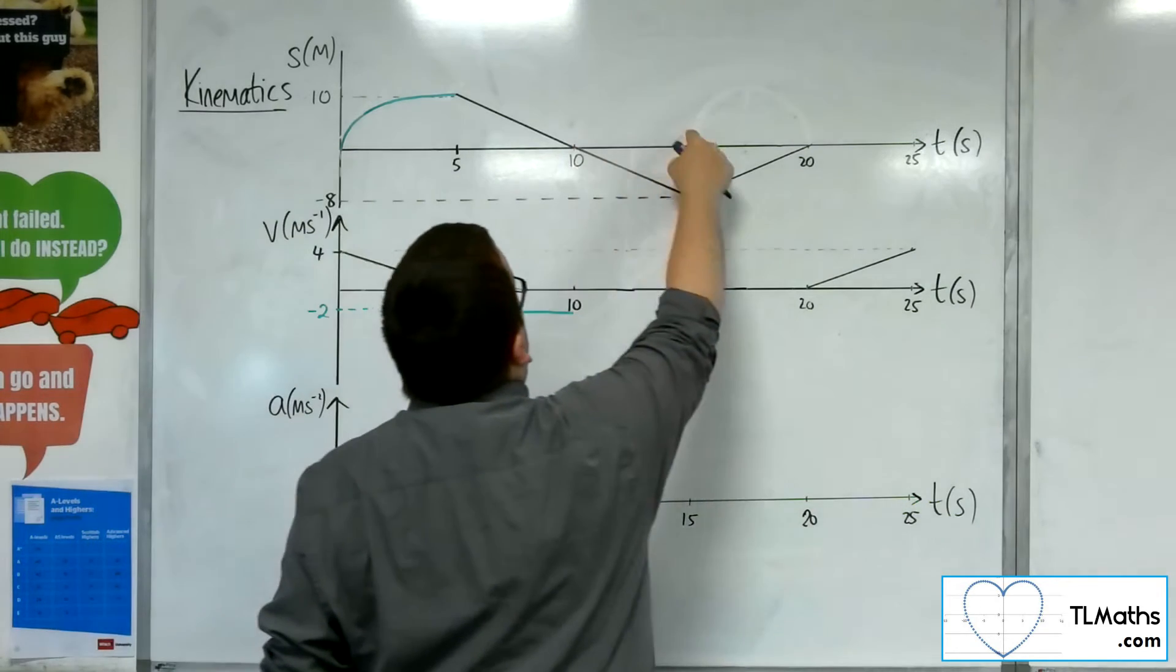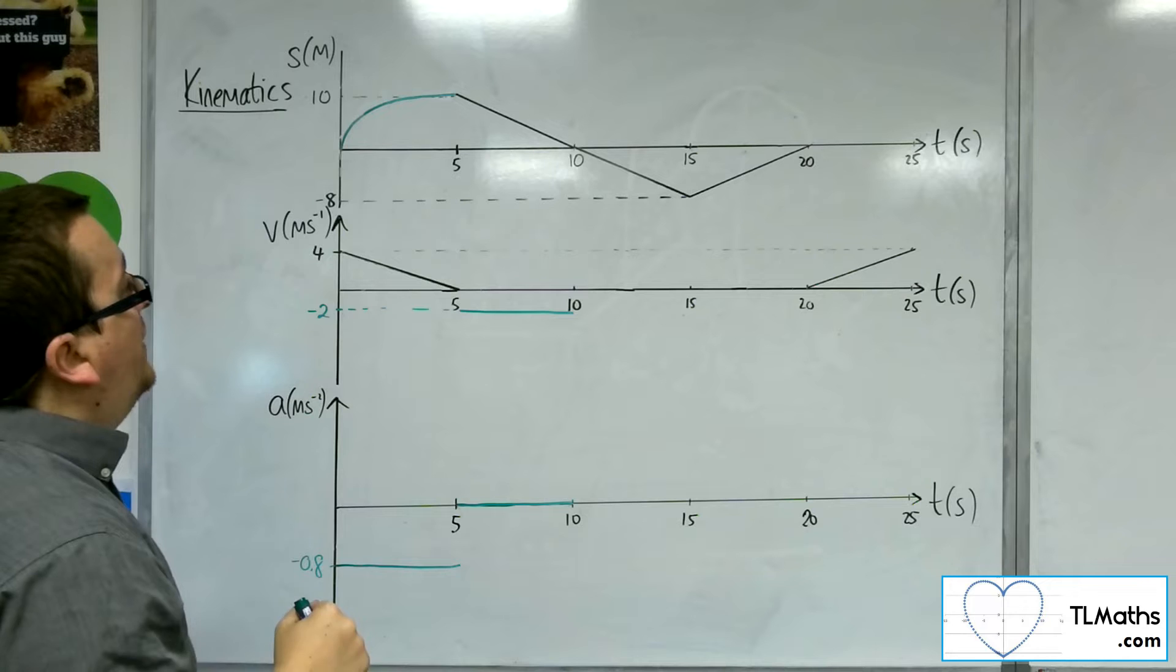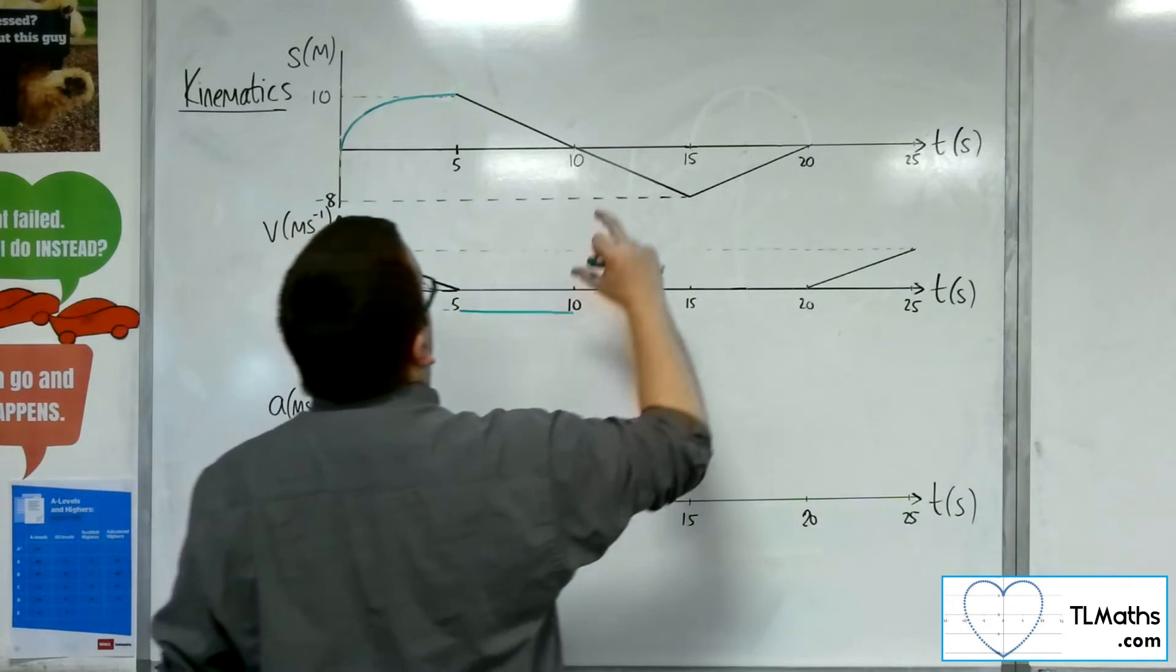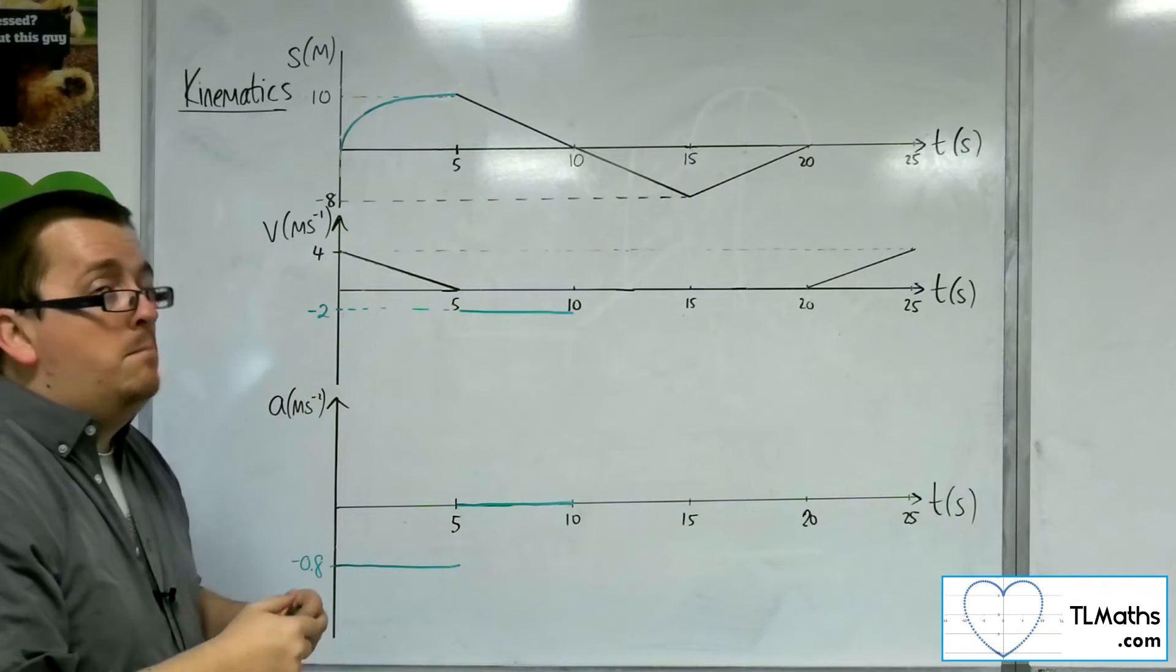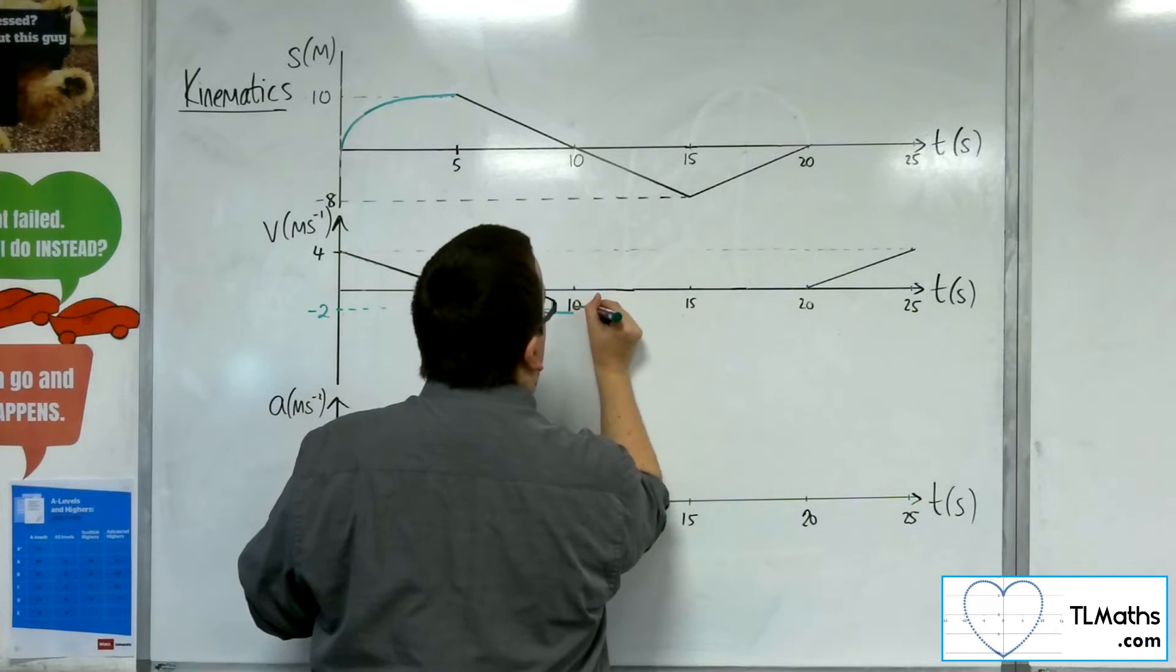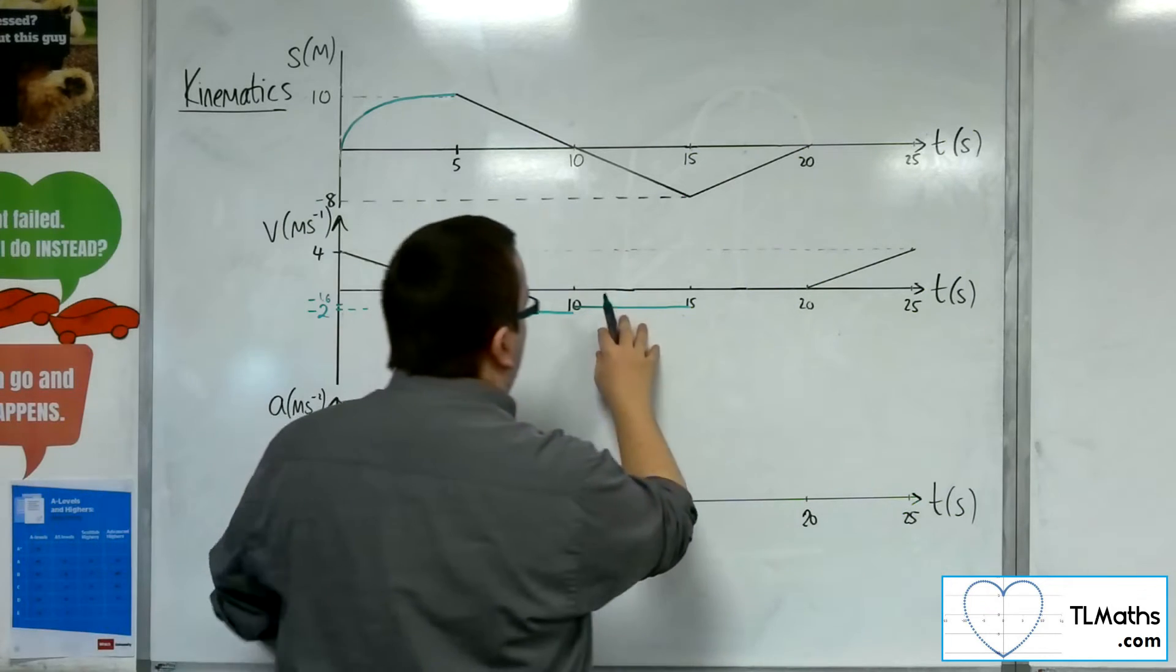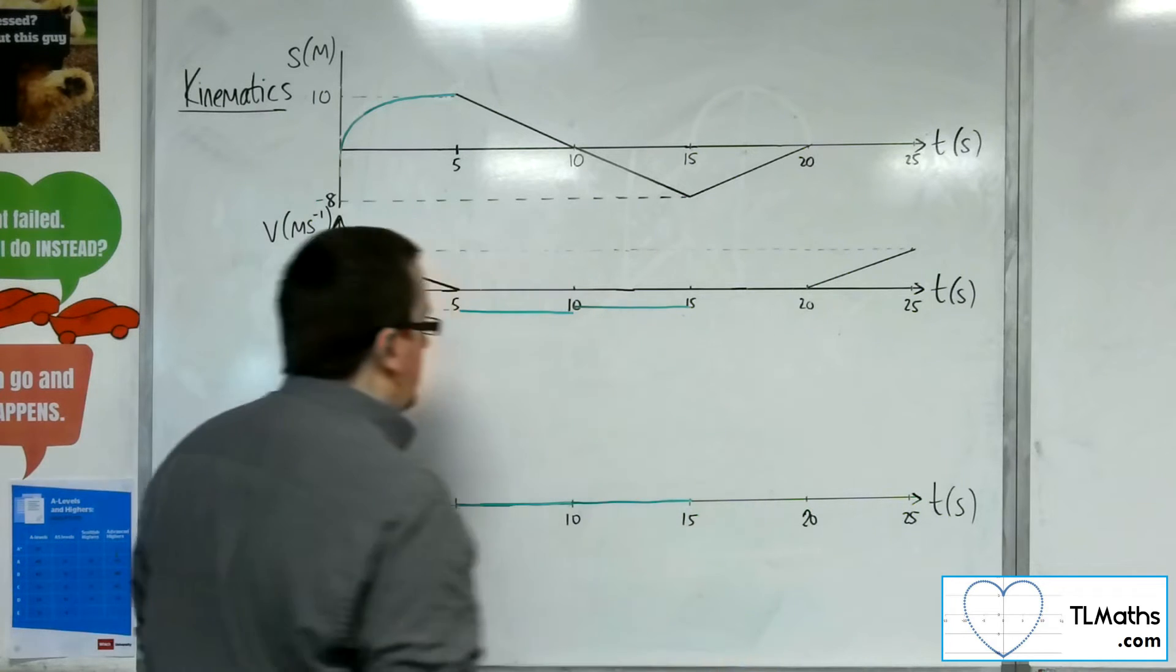Now, between 10 and 15, I drop down to minus 8 meters, so I'm going back on myself. Now, the gradient of that line will be my velocity. So we've got minus 8 divided by 5, and that will give me minus 1.6. So minus 1.6 would be a line that looks something like that. So we're going to have minus 1.6 in there. And then the acceleration will be the gradient of that line, which is still 0.